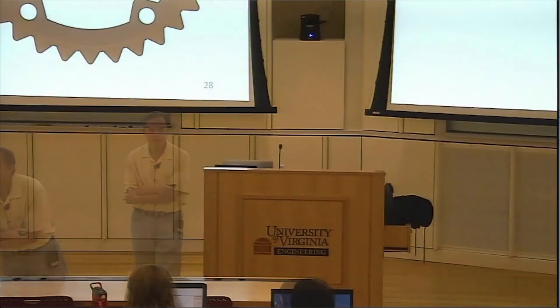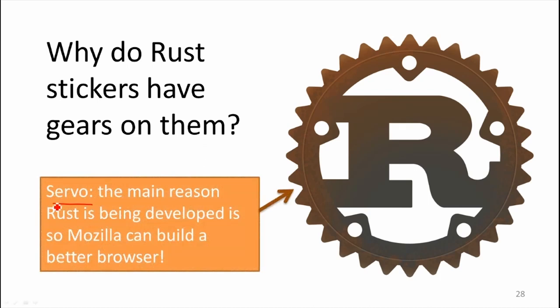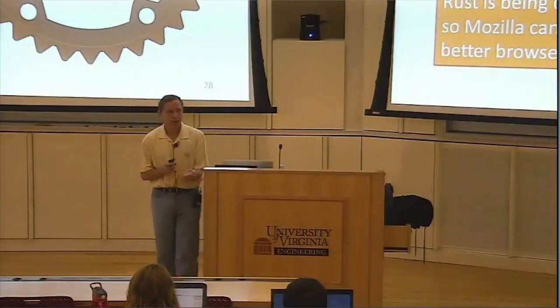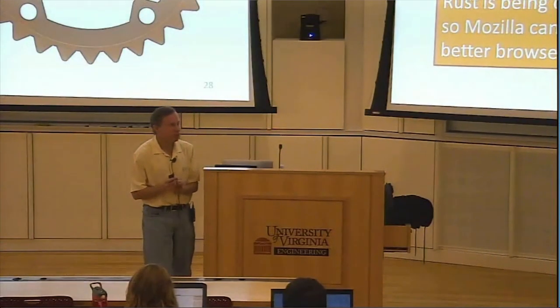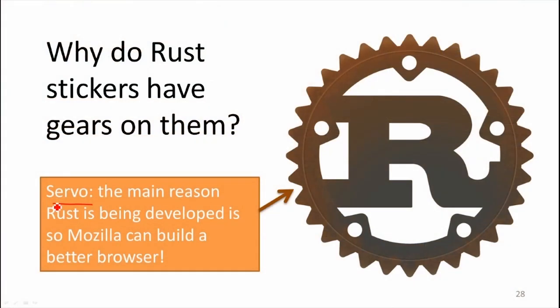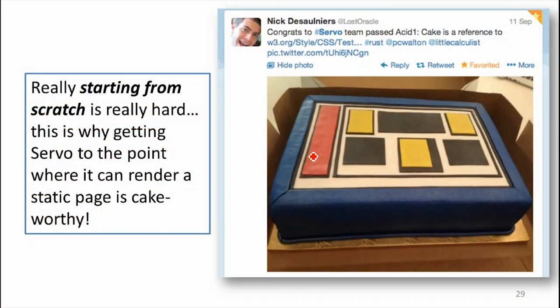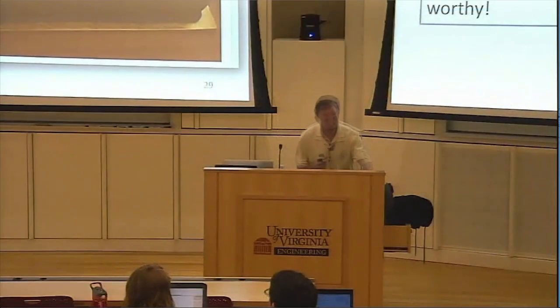Why do the Rust stickers have gears around them? It's a work in progress — the gears represent Servo. The main motivation behind Mozilla building Rust is to build a better browser engine, one that can run an individual page using lots of threads in a way that's safe and robust. On an individual page today there's code from lots of different parties — third-party scripts, code that doesn't necessarily trust each other, but needs to run at the same time for the best user experience. This is really starting from scratch, as opposed to how Chrome started. And starting from scratch is really hard — that's why none of you are running Servo today. But there are good reasons to start from scratch if you really want to use machine resources well.